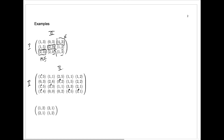Now for player 2, who chooses columns, we mark the highest number in each row in the second position. In the first row the 5 is highest for player 2, and that occurs two different times. In the second row the highest for player 2 is 6. In the third row it's 5. In the fourth row the highest for player 2 is 5.